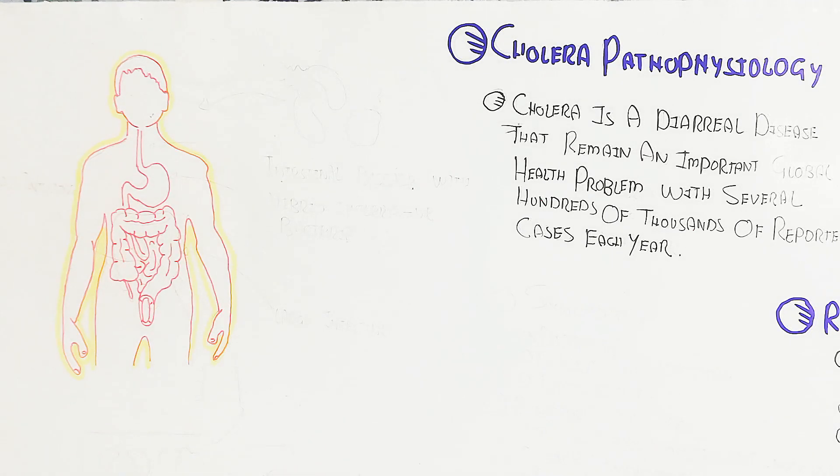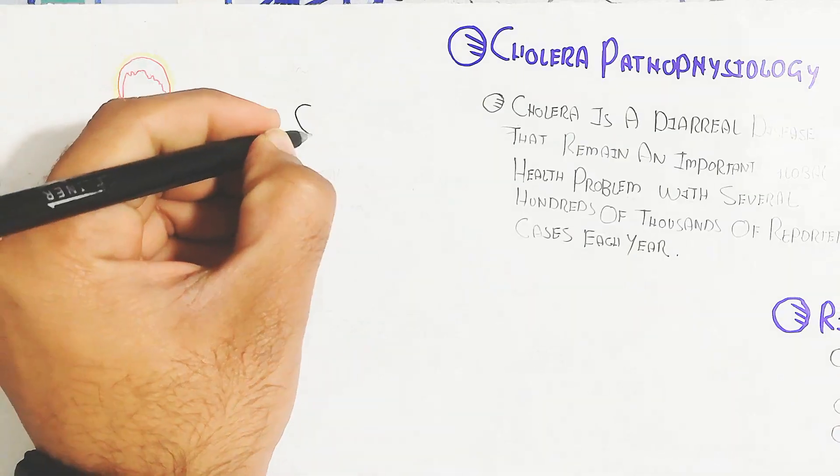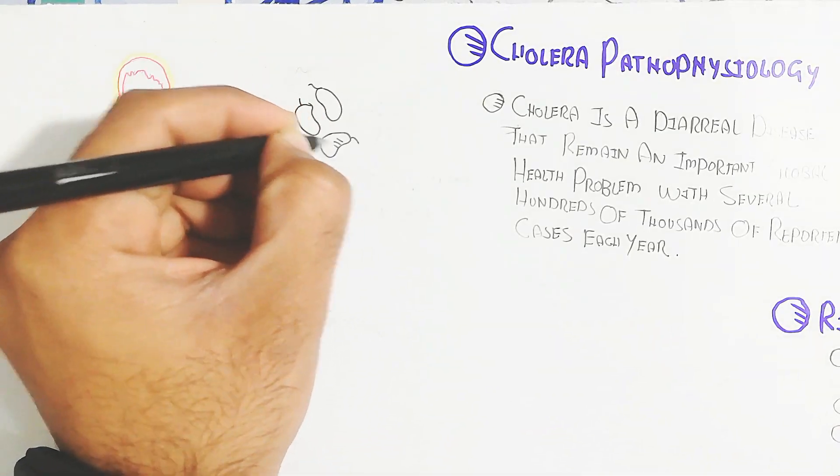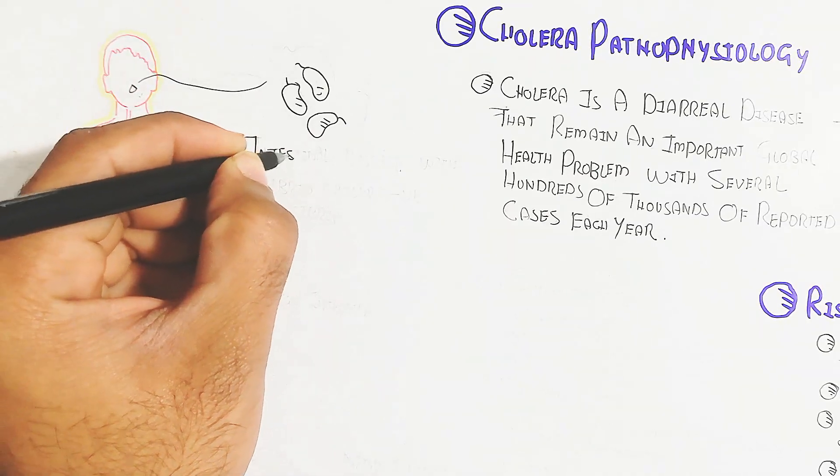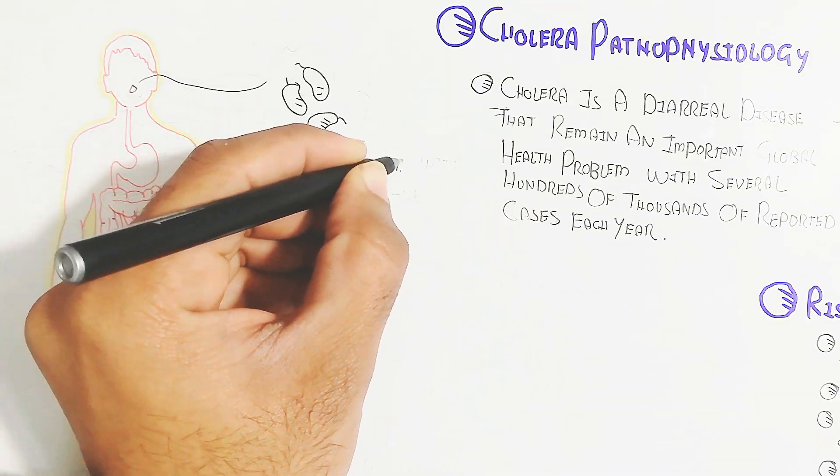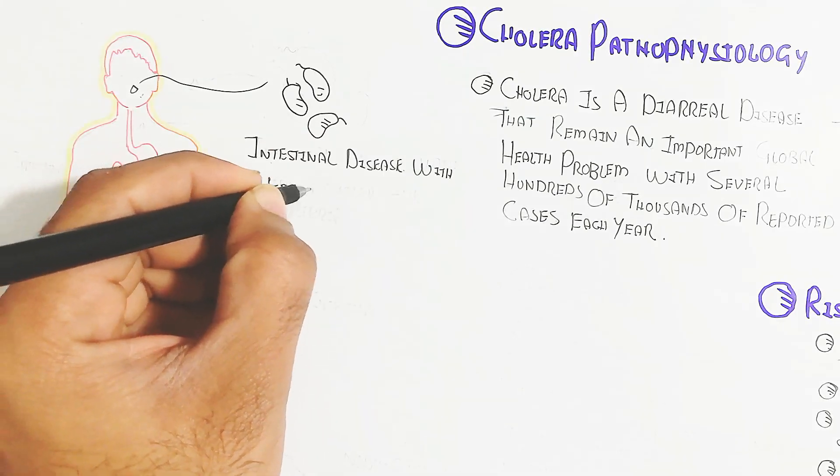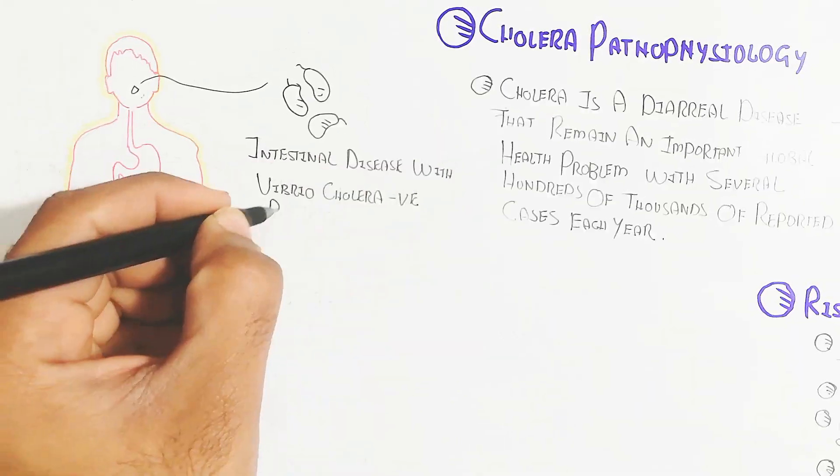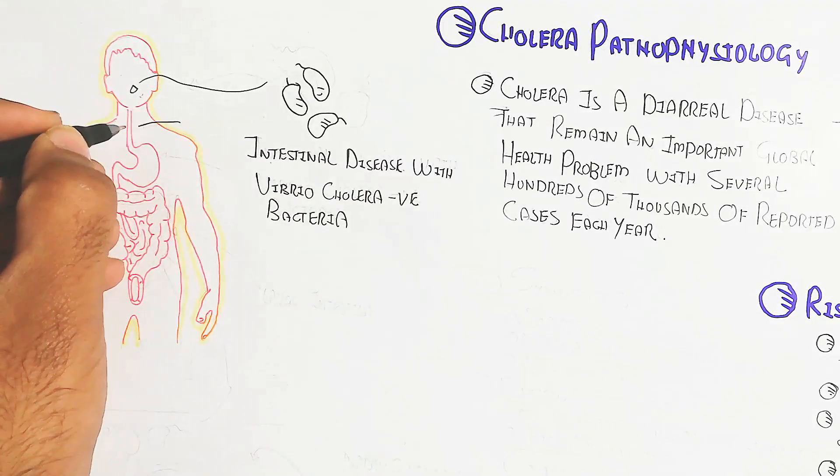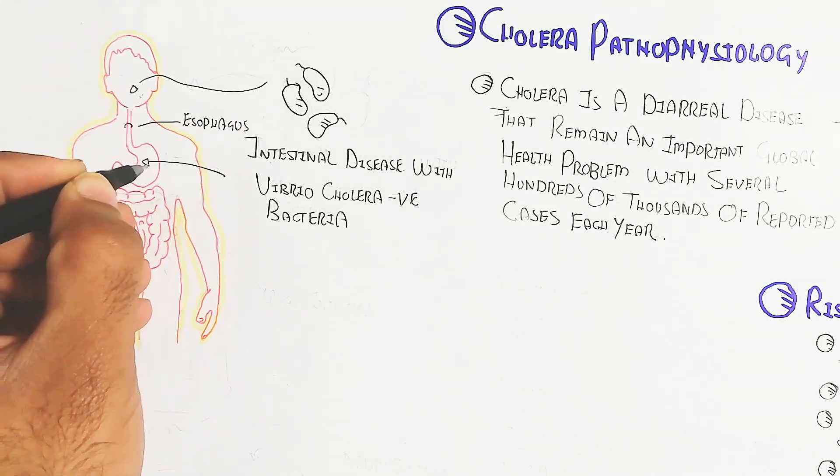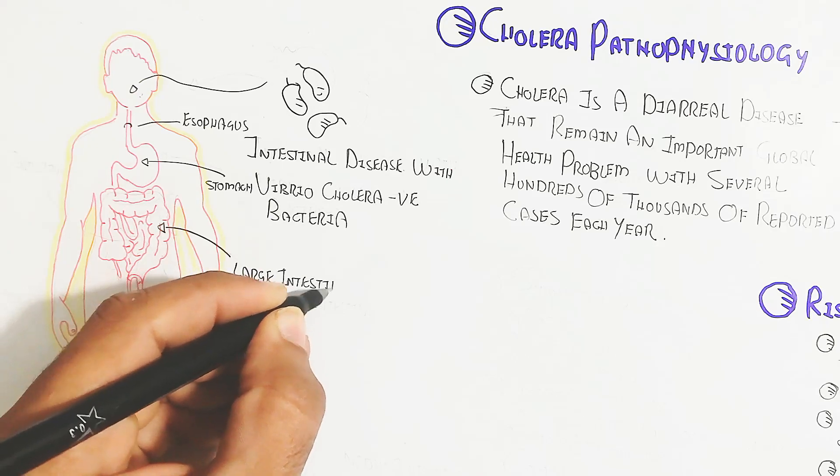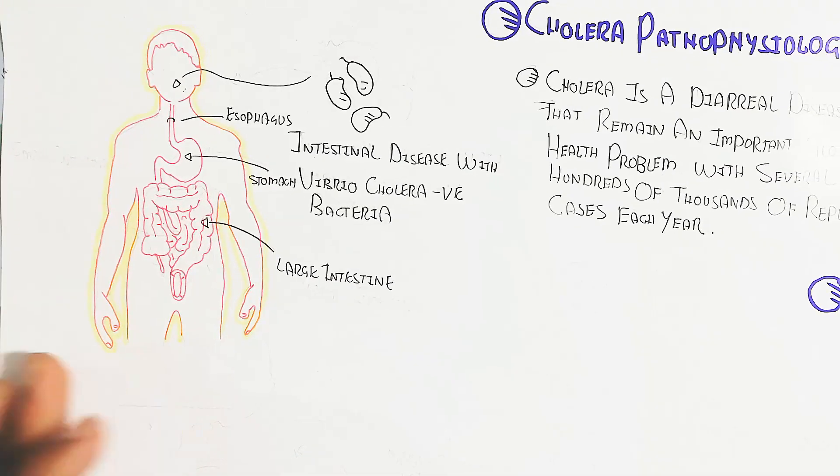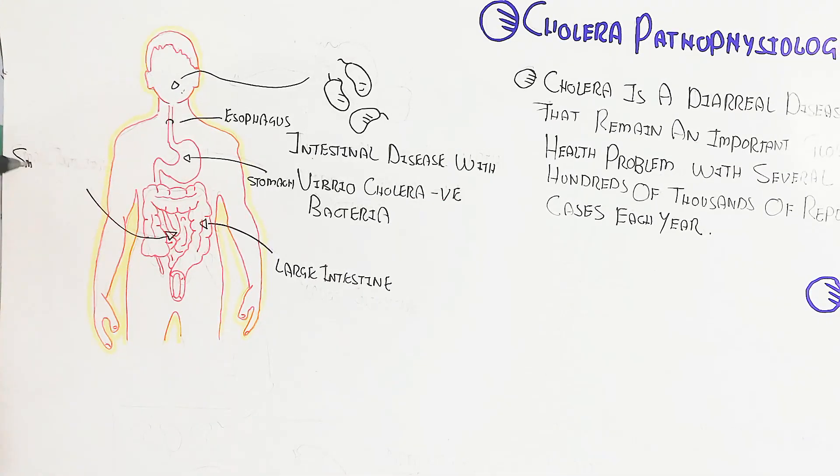This is a person's digestive system with intestinal disease caused by Vibrio cholerae, a gram-negative bacteria. When ingested, it passes through the esophagus into the stomach. If stomach acid is not present, the bacteria can grow. When it reaches the small intestine, it will infect.